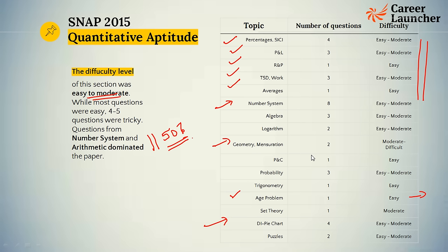SNAP has never given very difficult quant sections, but as was noticeable in IIFT, reasoning was never difficult but turned out to be slightly tricky this year. So utilizing the first five minutes scanning through the paper is very important — use those four to five minutes to judge the level of difficulty of each section and understand if quant is at par with previous years or if there's a slight change. Overall for the quant section, give yourself roughly about 50 minutes to do about 30 to 32 questions, targeting about 90% accuracy.